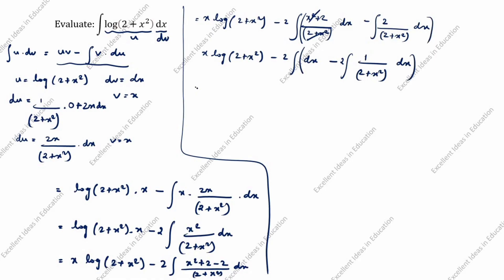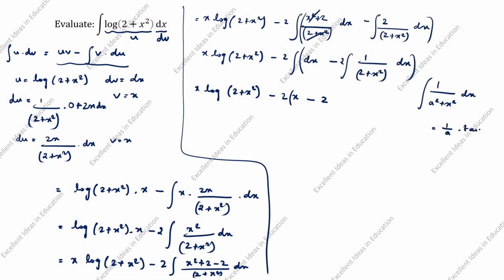So we get x·log(2 + x²) minus 2 times integration of dx, which is x, minus 2 times integration of 1/(2 + x²) dx. The formula for integration of 1/(a² + x²) dx is 1/a into tan inverse of x/a.